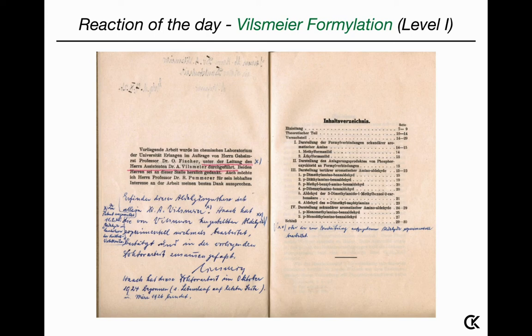After this time, Vilsmeier actually moved on to the IG Farben, which later became the Badische Aniline und Soda Fabrik — BASF — where he worked as an industrial chemist for quite some time in the fields of novel dyes and dye synthesis.